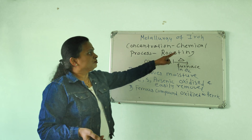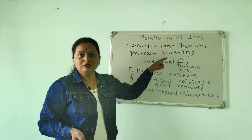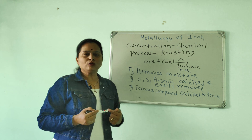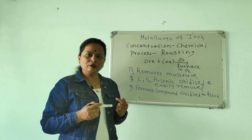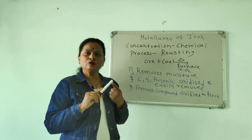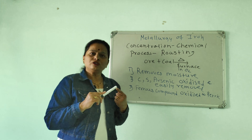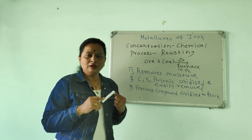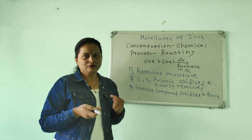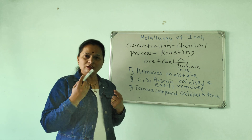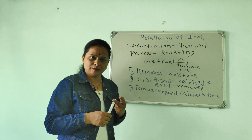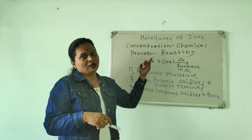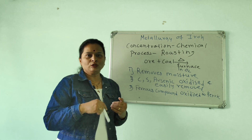So the steps for hematite ore metallurgy are: first, crushing the stones to fine powder; second, concentration by physical process — gravity separation and magnetic separation — and by chemical process — roasting. Then comes the reduction step.